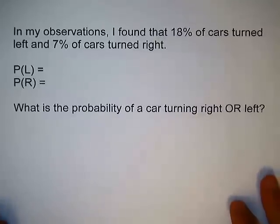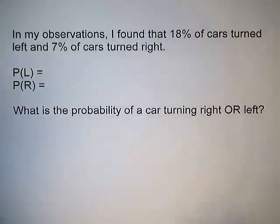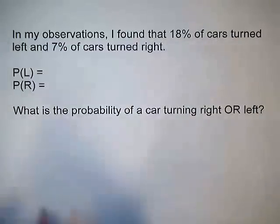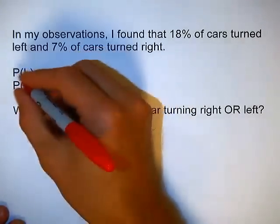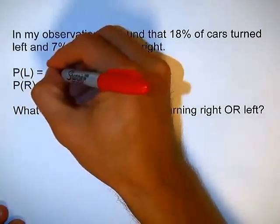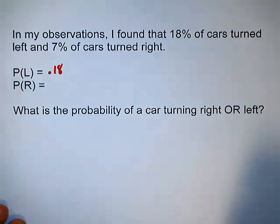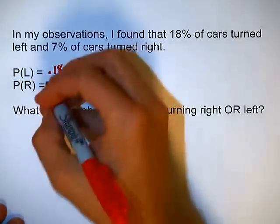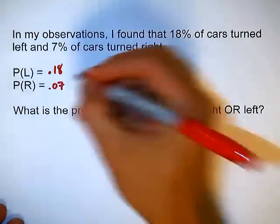After performing the chance experiment many times, I found that 18% of cars turned left, and 7% of cars turned right. If I use these to represent my probabilities, the probability of L would be 0.18, and the probability of R would be 0.07.